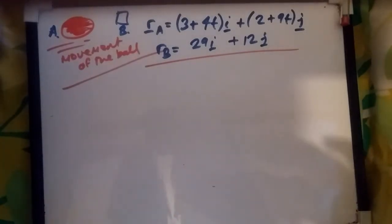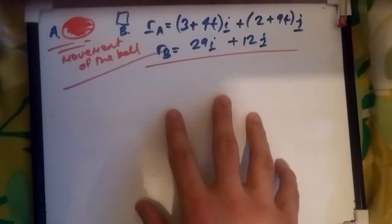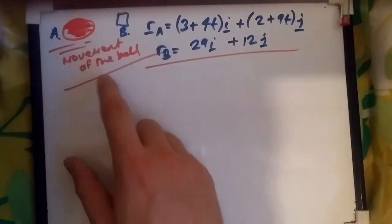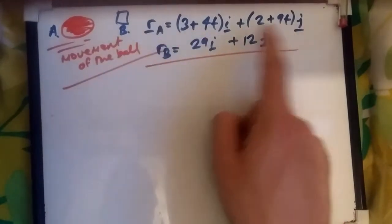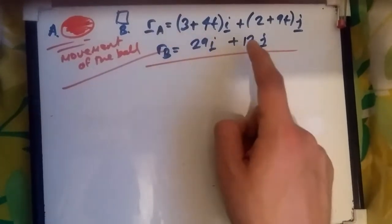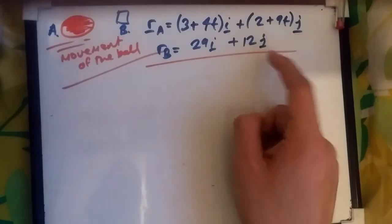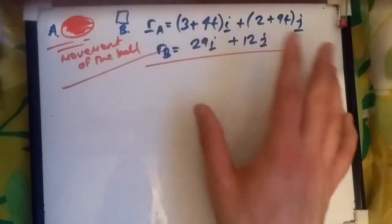And how do we calculate that? Well, let's take this example that I presented here. So suppose we use a ball as a particle. The movement of the ball and its position vector is given by this: 3 plus 4t i plus 2 plus 9t j. So this is where the ball would be at some time t.